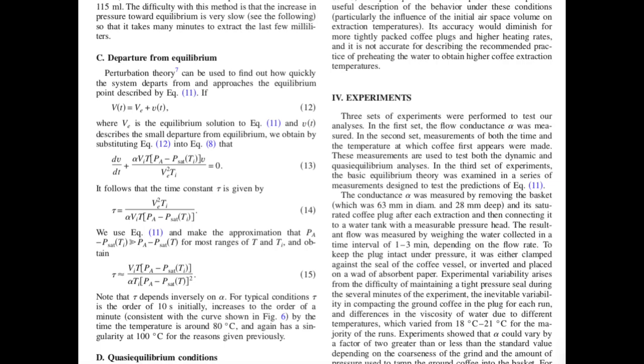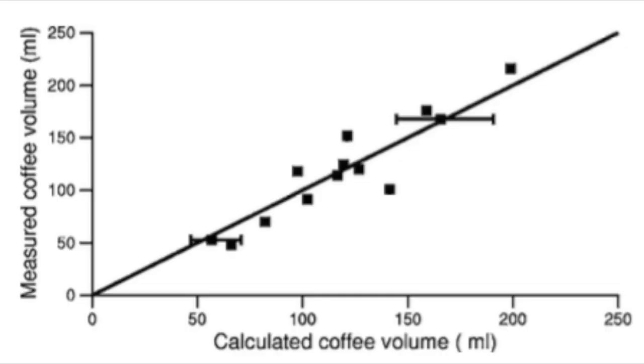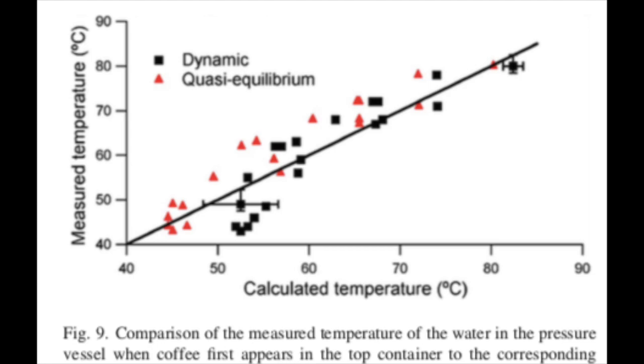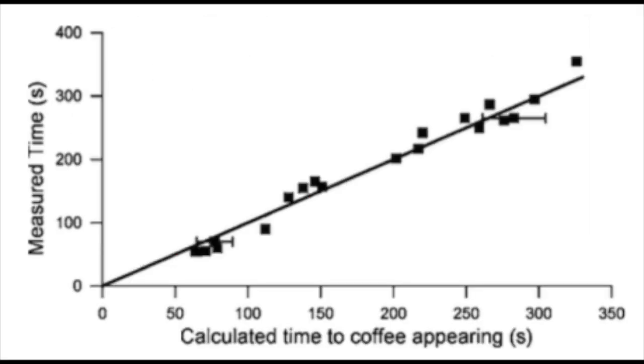The remainder of the paper involves experimental measurements of things like the amount of coffee produced for different starting parameters, the temperature at which coffee first appears, the time at which the coffee first appears, and then comparing it to theoretical predictions with good agreement to show that his model isn't crazy.